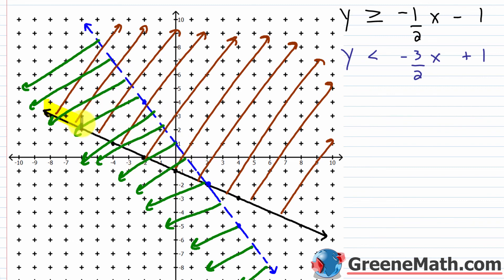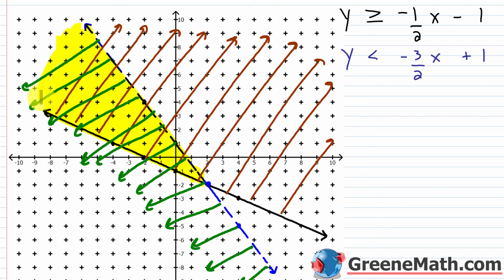The black line itself is included up to the intersection point, but the blue line is not part of the solution. I highlight the overlapping region in yellow. This is an infinite area that continues forever — we just look at a small portion to get a general idea of where the solution for the system would be. Anything in that highlighted region of the graph satisfies the system.